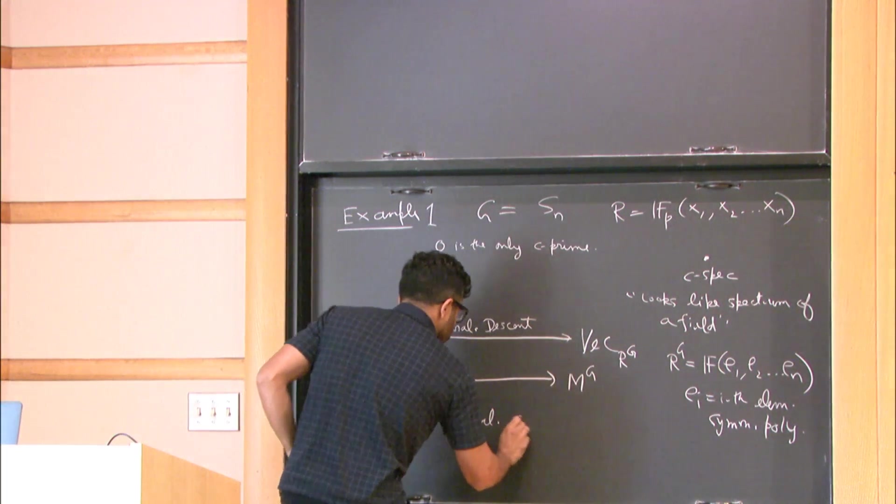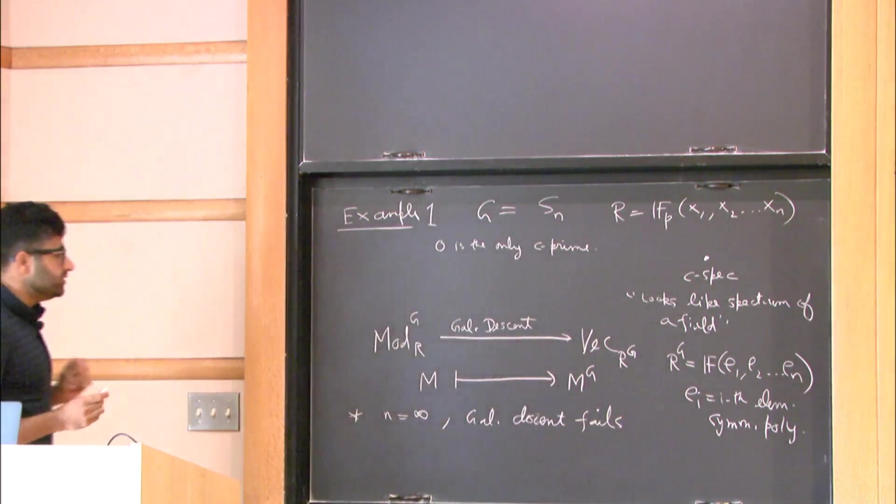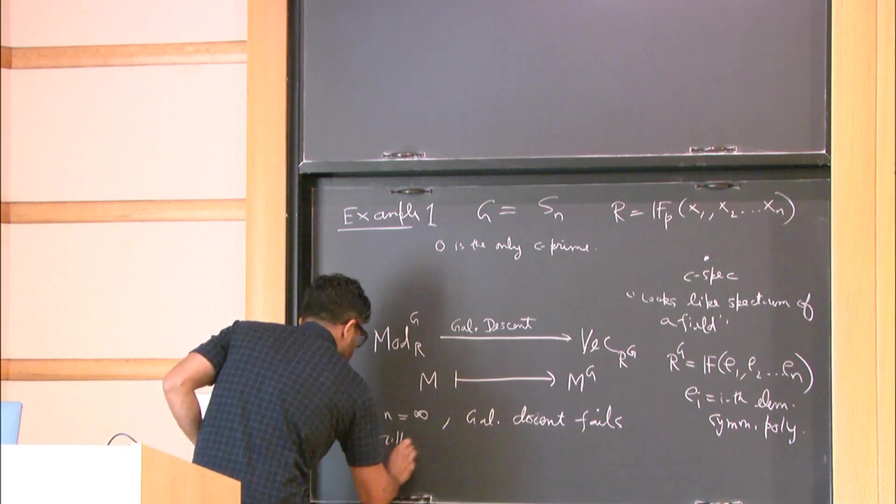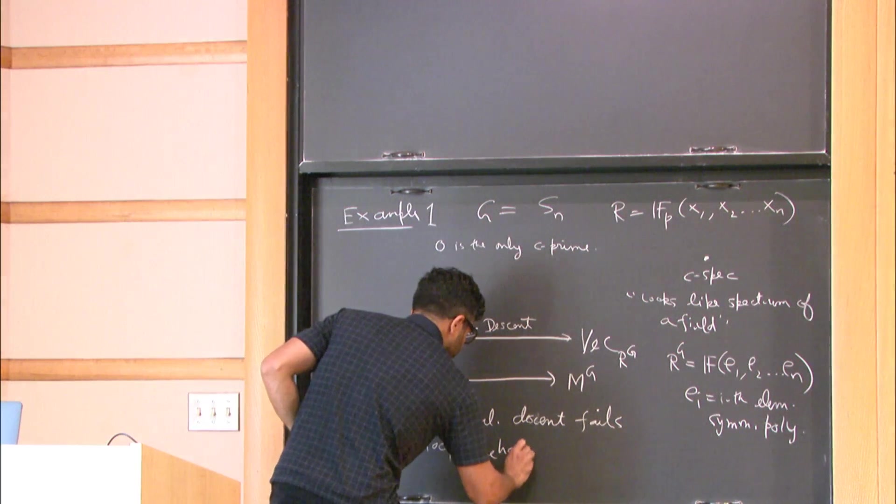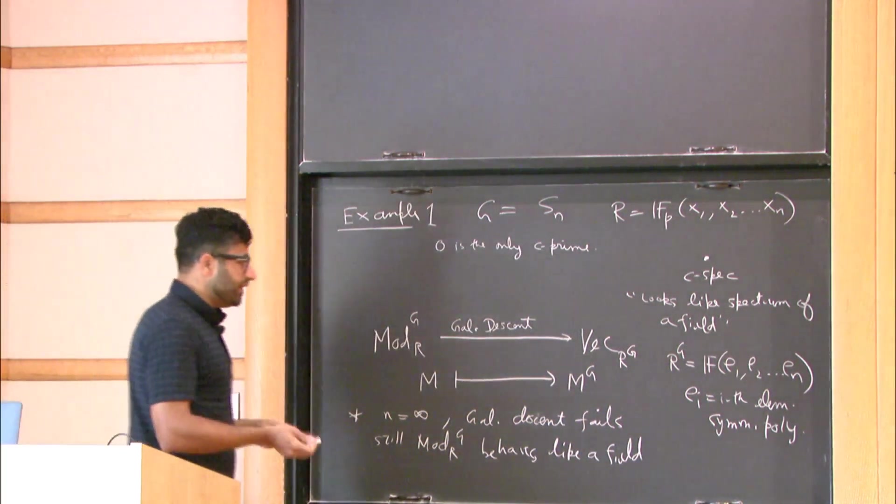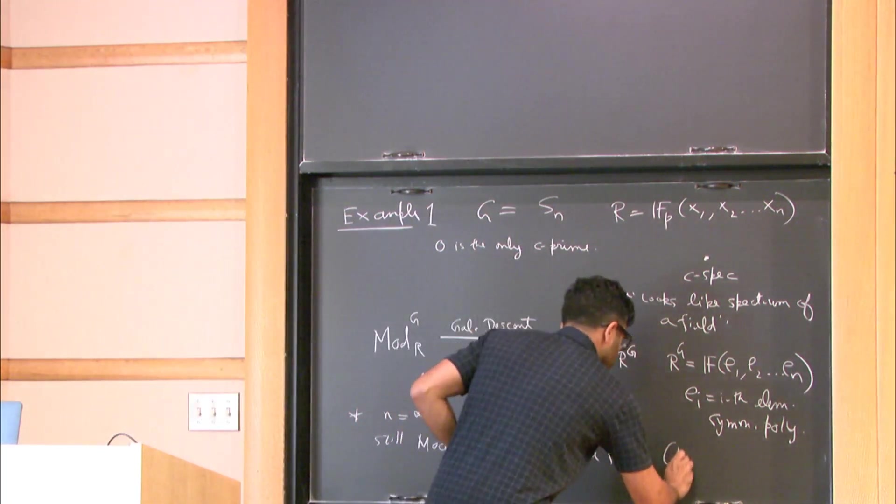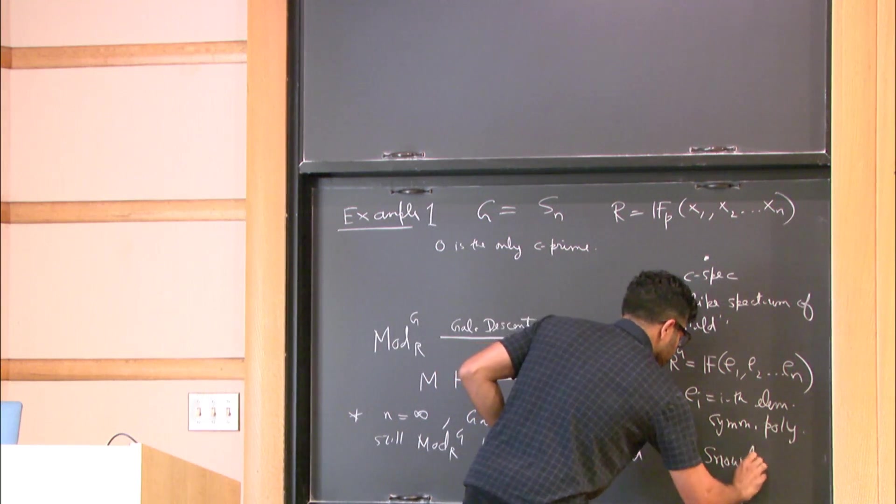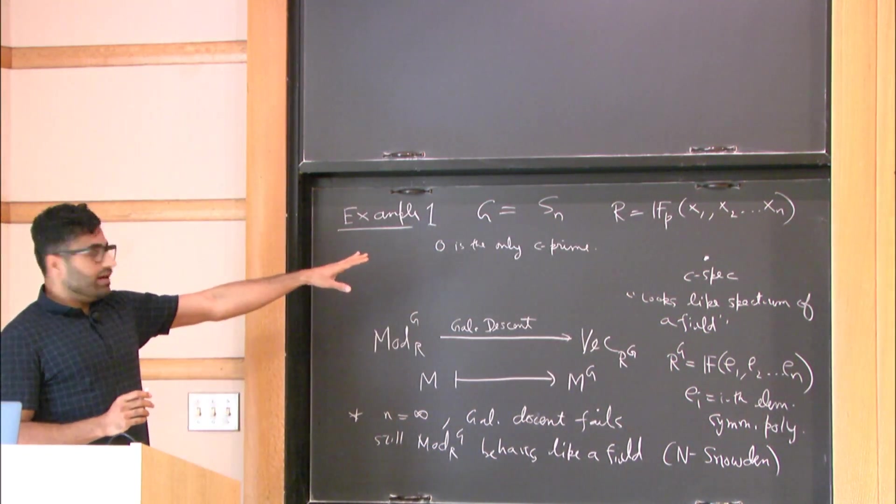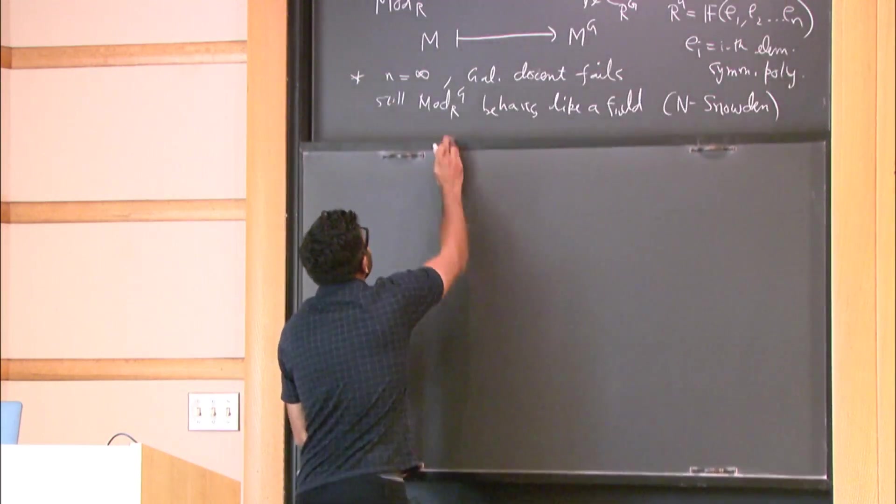Now I want to say that if you take N equals infinity, then you can talk about the same thing, but Galois descent is going to fail. So Galois descent in this case is going to fail, but you can still make sense of all of this, and it does still behave like a field. In particular it has Krull dimension zero, every object has finite length. You can talk about finiteness of injective resolution and find out the Grothendieck group and so on and so forth. You can completely describe this and this is work joint with Andrew Snowden. So I'm not going to talk about that more, but the point is that C prime, C spectrum is a good thing to study even when N equals infinity.